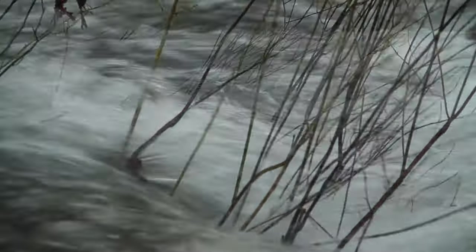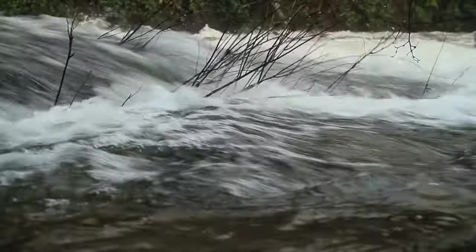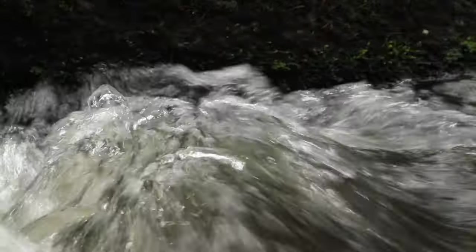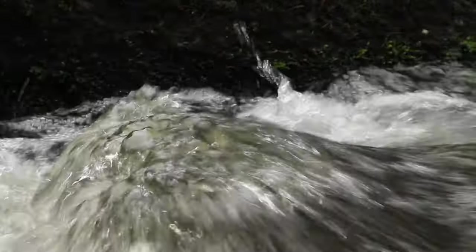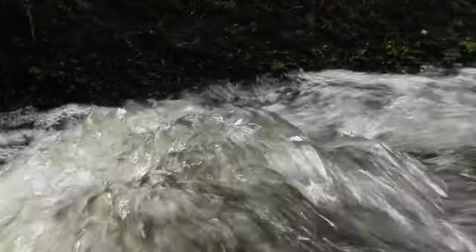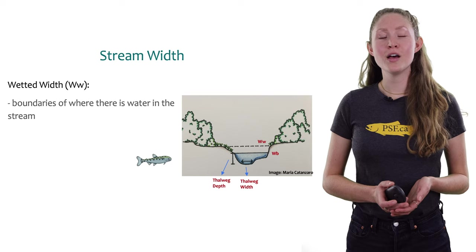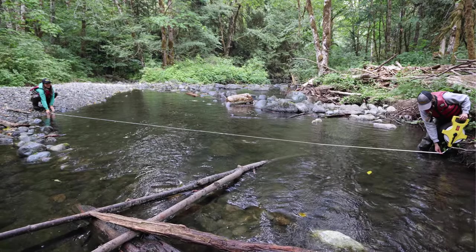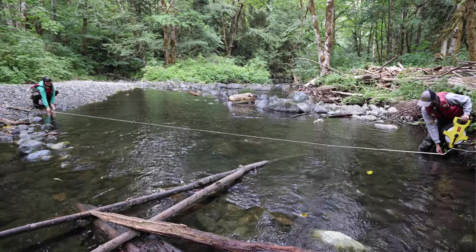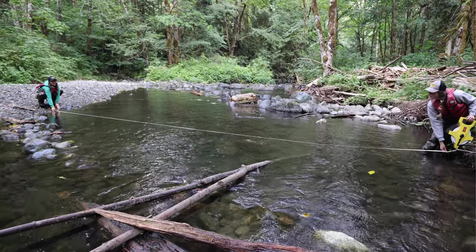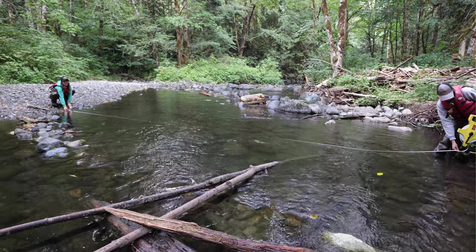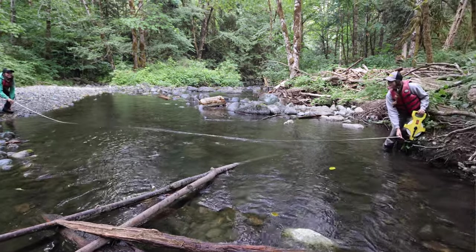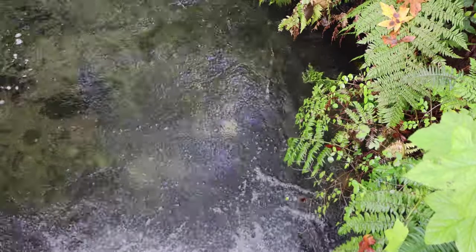When do you think high water happens? Every day? Only during certain seasons? During storms? Think back to what influences the amount of water in a stream at a given time. The wetted width describes the boundaries of where there is water in the stream when you're actually measuring it, telling us the width of habitat currently available for salmon or fish to use. Think about how often this changes.